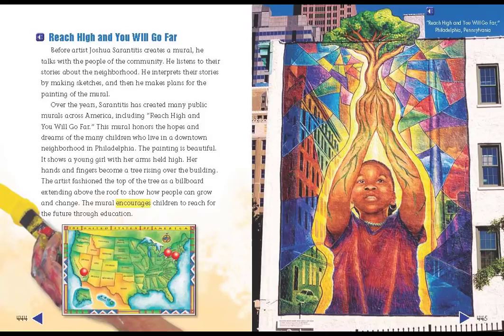Reach High and You Will Go Far. Before artist Joshua Serentitus creates a mural, he talks with the people of the community. He listens to their stories about the neighborhood. He interprets their stories by making sketches, and then he makes plans for the painting of the mural. Over the years, Serentitus has created many public murals across America, including Reach High and You Will Go Far.